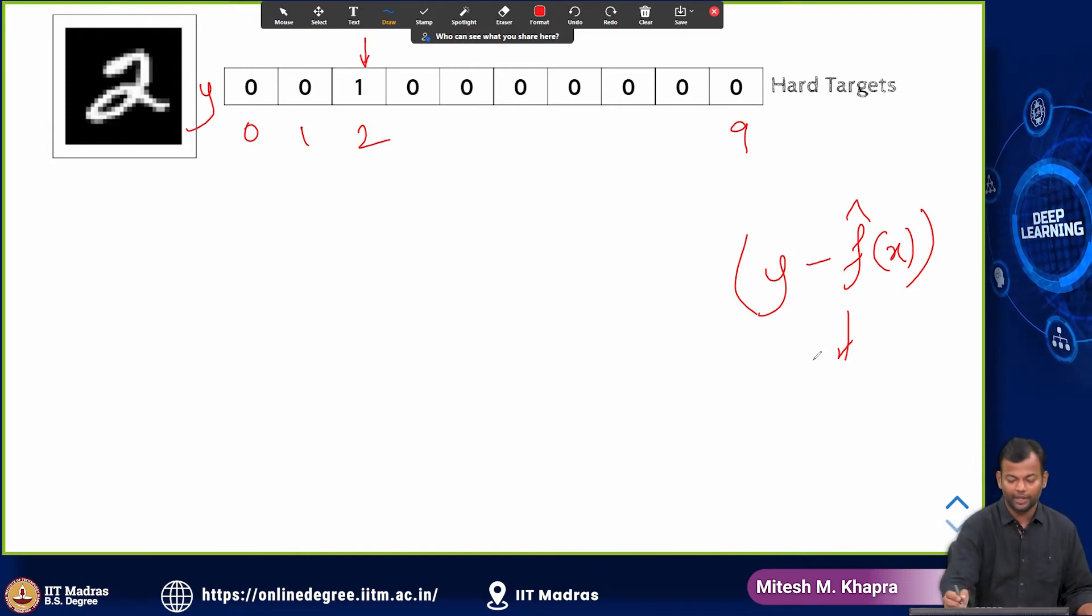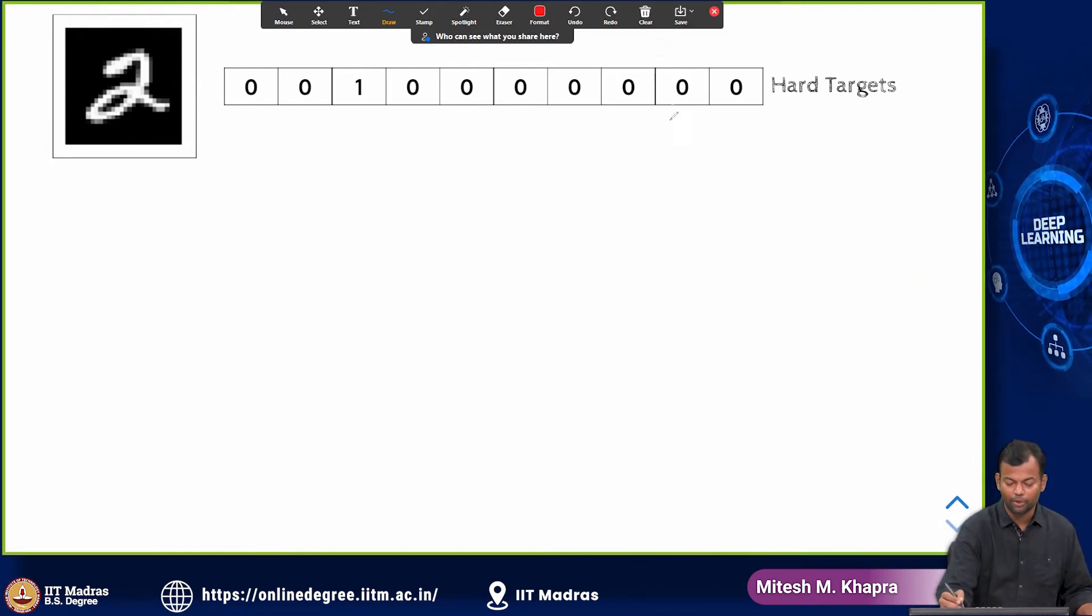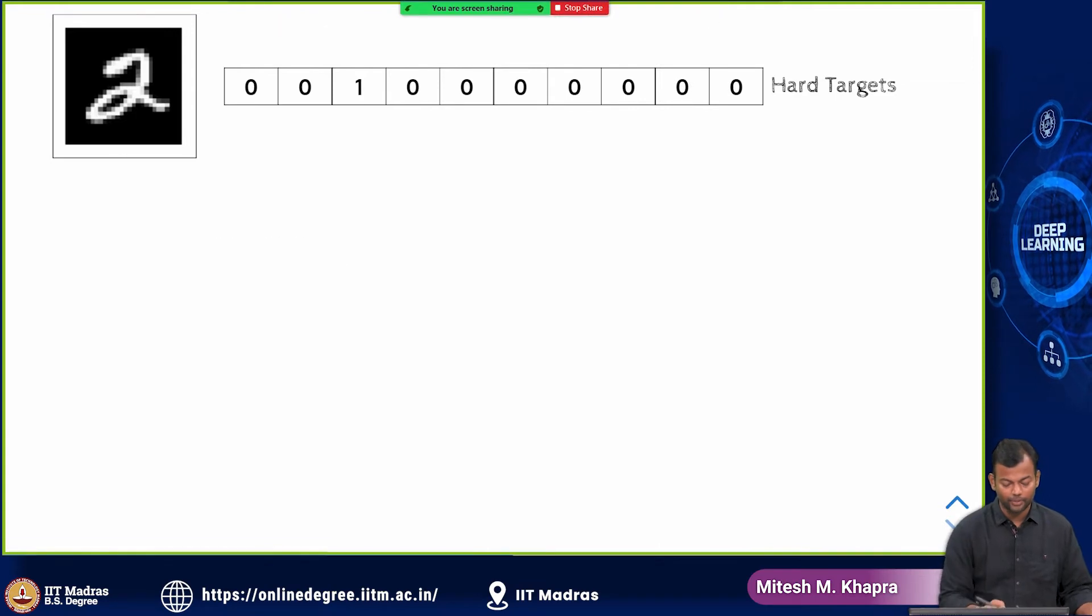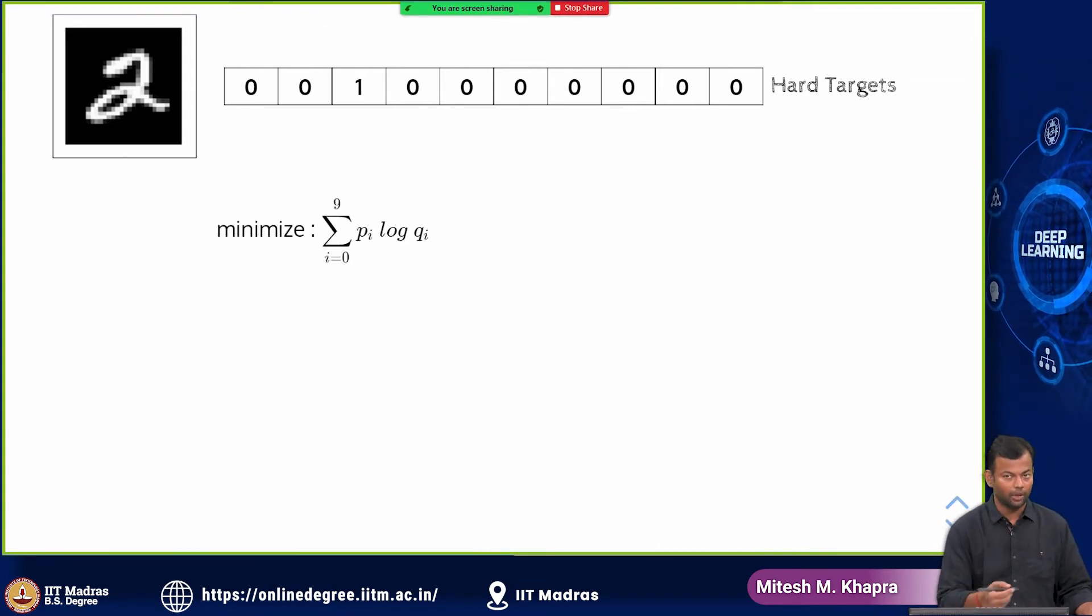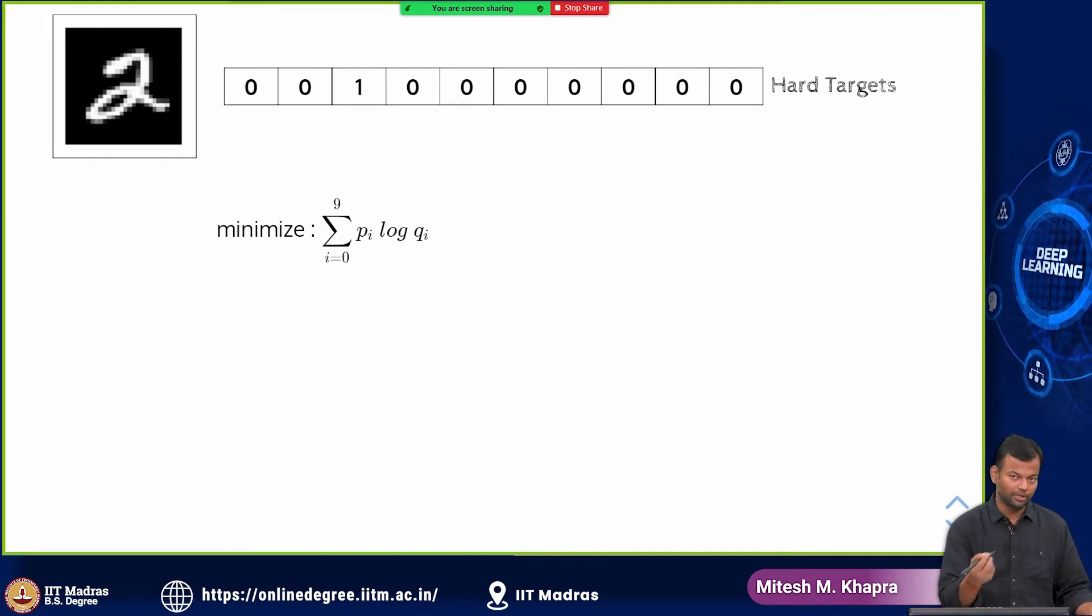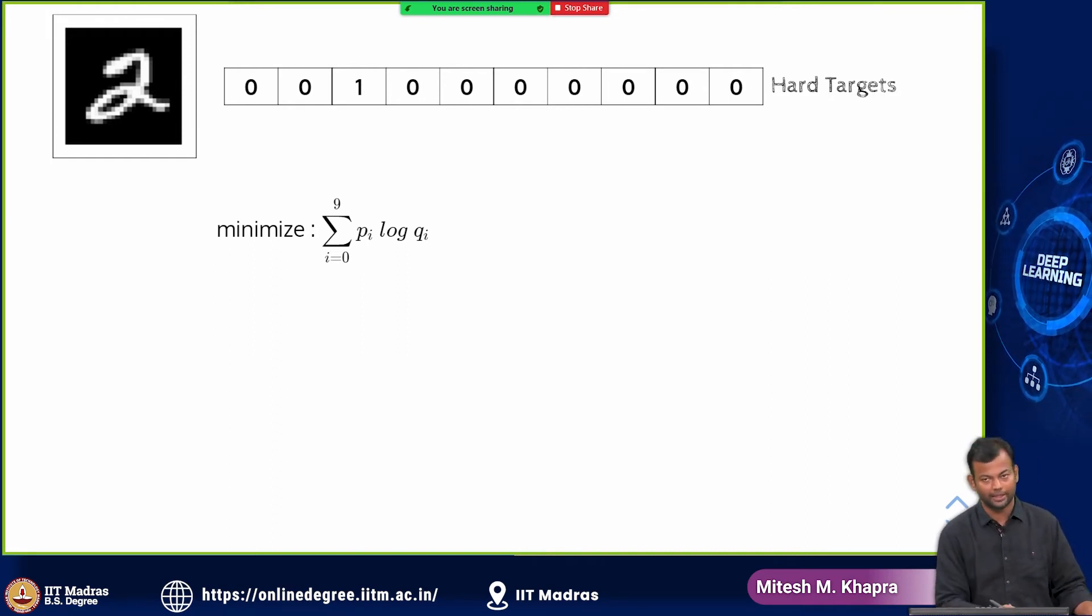But now what if I do the following? Instead of using this output, the true output that was given to me, this is what my loss, this is what I am going to minimize. This is my cross entropy loss that I am going to minimize. P here is the true label and Q is the predicted label.